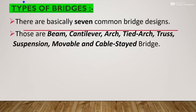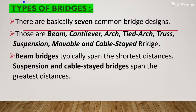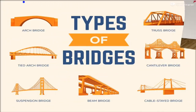Bridges may also carry water, support power cables, or house telecommunication lines. There are basically seven common bridge designs: beam, cantilever, arc, tied arc, suspension, movable, and cable-stayed bridges. Beam bridges typically span the shortest distance, while suspension and cable-stayed bridges span the greatest distance.